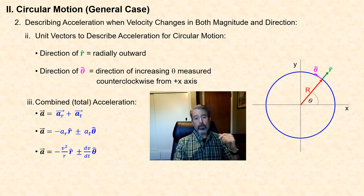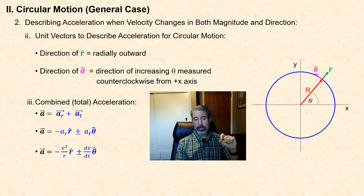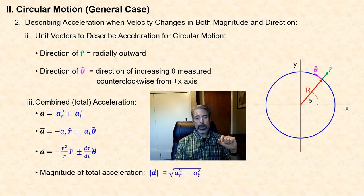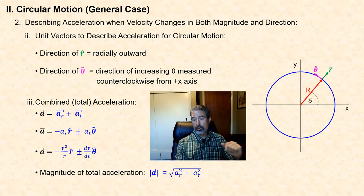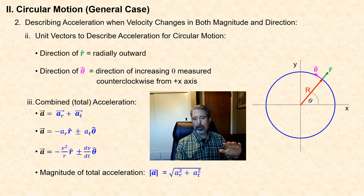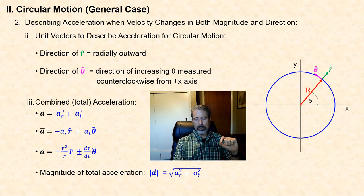The magnitude of the total acceleration is the square root of the sum of the squares of the two perpendicular components — the tangential and radial components. In the next slide we'll look at a specific problem to get a more visual interpretation of the magnitude of that total acceleration.